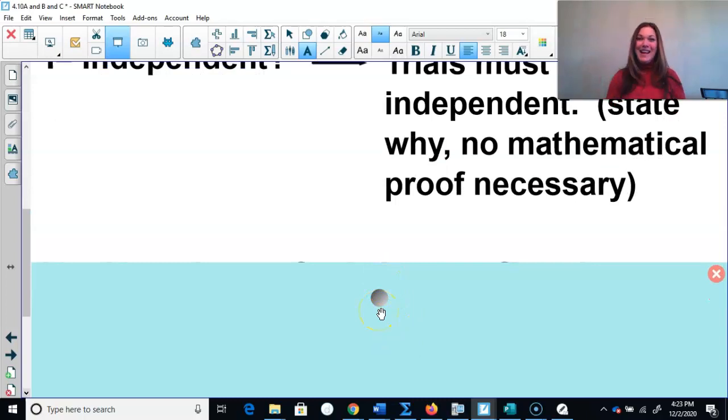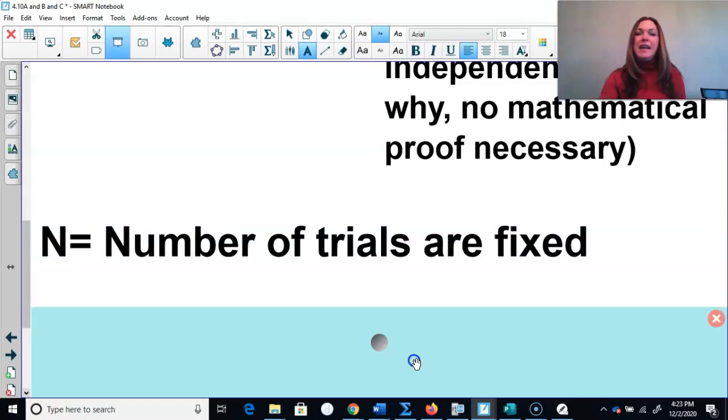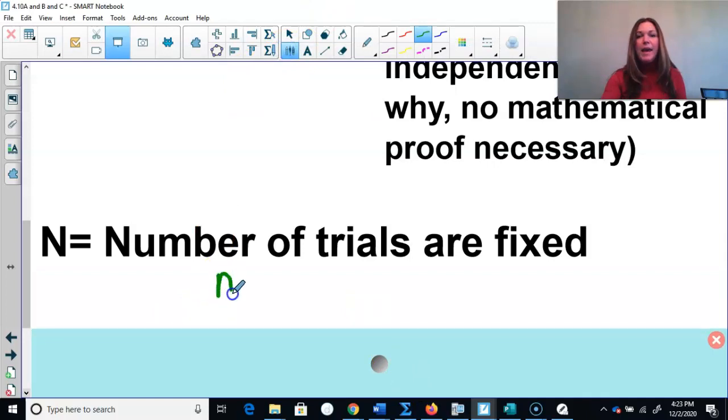N stands for the number of trials are fixed. So you're going to see something like, what's the probability that out of 10 baskets that they shoot, they'll make three of them. Or if they flip a coin 10 times, three of them will be heads. The number of trials are fixed. They're going to take a certain amount of shots, flip a coin a certain number of times, roll a dice a certain number of times. You will see that N equals the number of trials are fixed, and we signify that by a little n equals that number of trials.